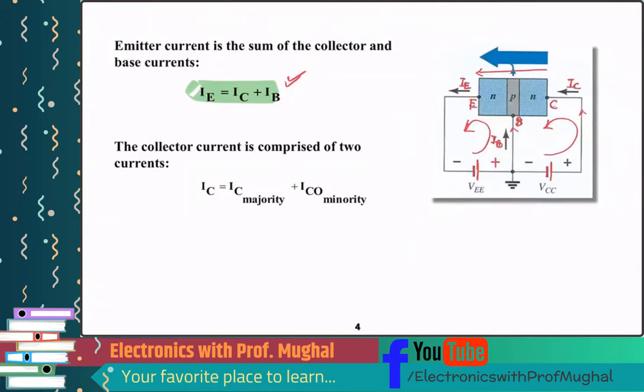Another thing, the collector current is comprised of two currents: one is the IC majority and IC minority.